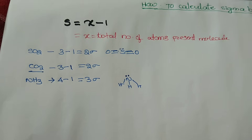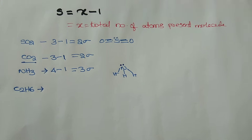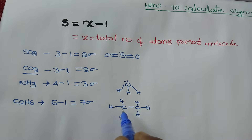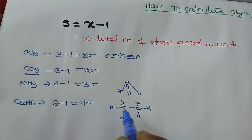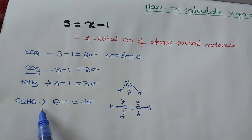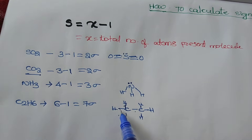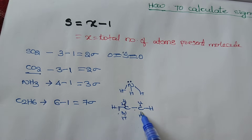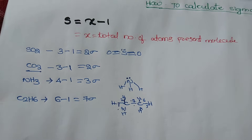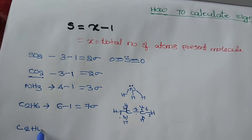Next, C₂H₆. I want to know the sigma bonds in C₂H₆. Counting the atoms: one, two, three, four, five, six, seven — eight total atoms. Each carbon forms three sigma bonds with three hydrogens, and carbon-carbon is one sigma bond. So there are seven sigma bonds in total.